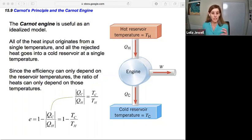So it says that all of the heat input originates from a single temperature, and all of the rejected heat goes into a cold reservoir at a single temperature. So instead of just being the hot reservoir up here, it's now hot reservoir at a set temperature Th, and the cold reservoir is now at a set temperature Tc, just one temperature.